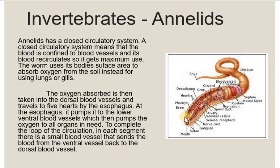In annelids, a closed circulatory system is present. This means blood vessels and a heart are present. The heart pumps blood to different body parts. There are two major vessels — dorsal and ventral blood vessels — which help in circulation and recirculation, carrying blood from and back to the heart.